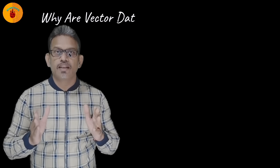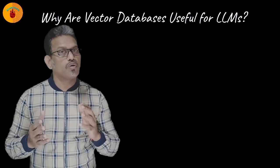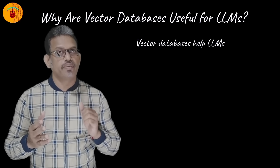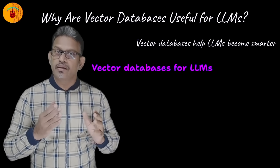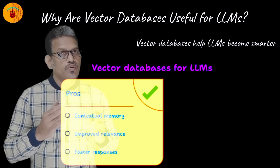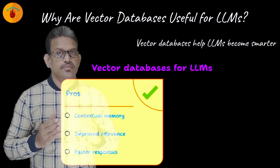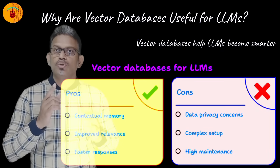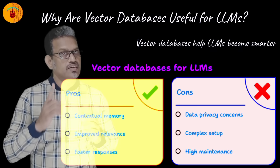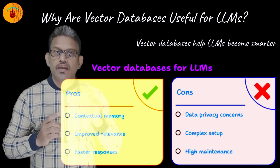Vector databases help LLMs become smarter, faster, and more relevant by providing contextual memory. They provide contextual memory, improved relevance, and faster responses to LLMs. However, you need to take care of data privacy concerns, complex setup, and high maintenance.